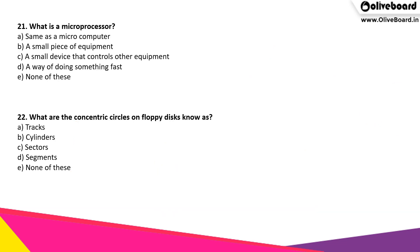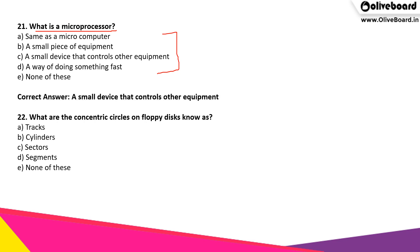What is a microprocessor? What is the function of a microprocessor from the options given to us? The correct answer is a microprocessor is a small device that controls other equipment.